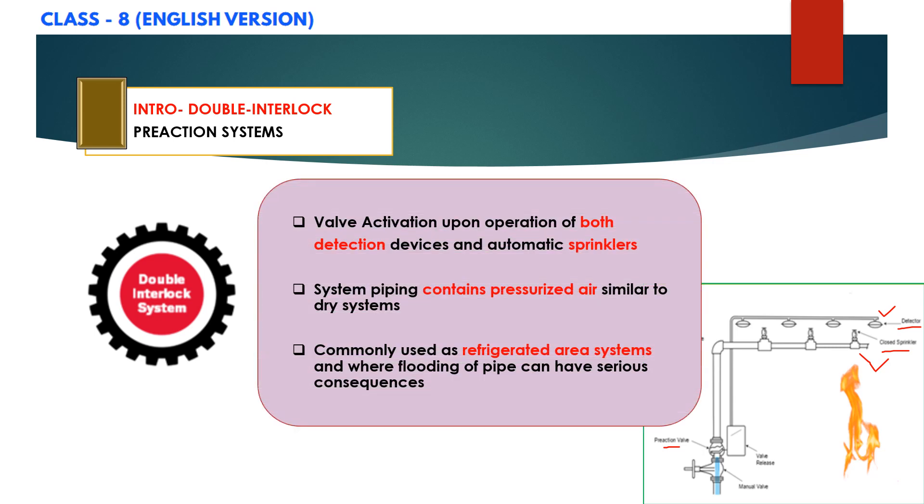In this double interlock system, system piping is pressurized with air or nitrogen using a dedicated riser-mounted compressor or tank-mounted compressors.